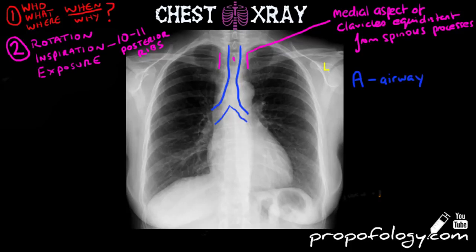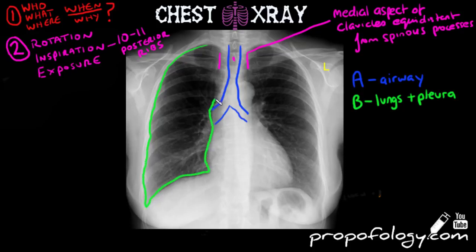Moving on to B, you're going to trace the lung fields and look at the pleural spaces as well. You're going to look and see if the lung markings go all the way to the lateral or side aspect of the rib cage, make sure there's no collections in the distal portions, and make sure there's no collapse of any segments of the lungs. Make sure there's nothing obvious in any of the lung fields that doesn't look the same as the other side. Of course the patient can have bilateral pathology, but it's good to compare each side and contrast.